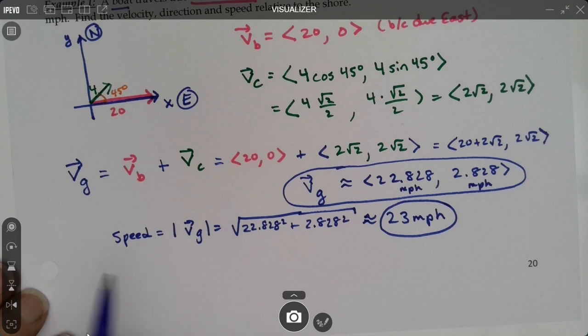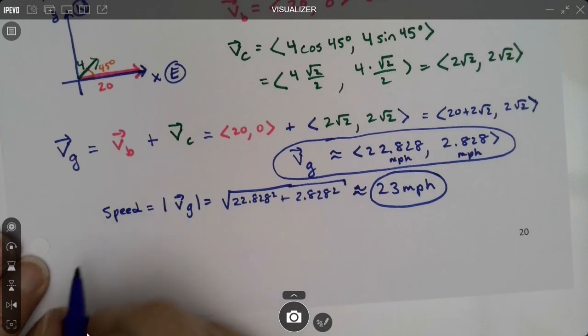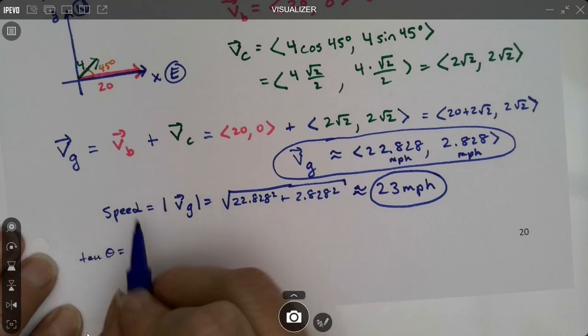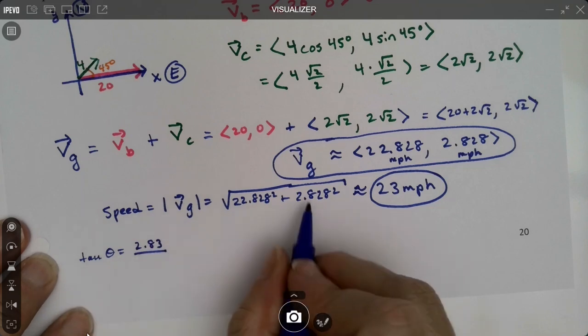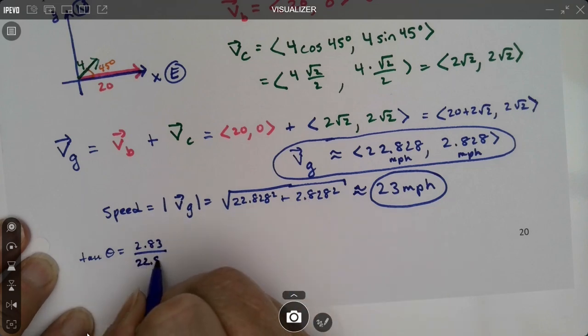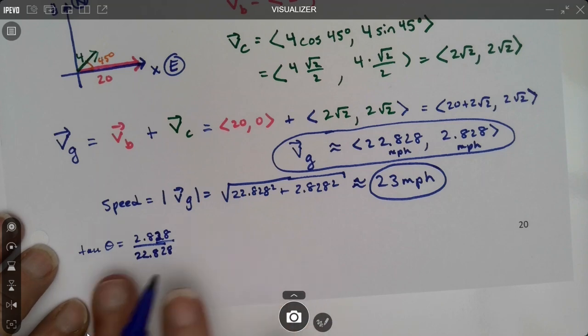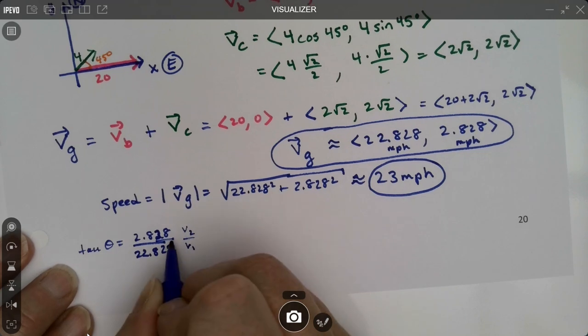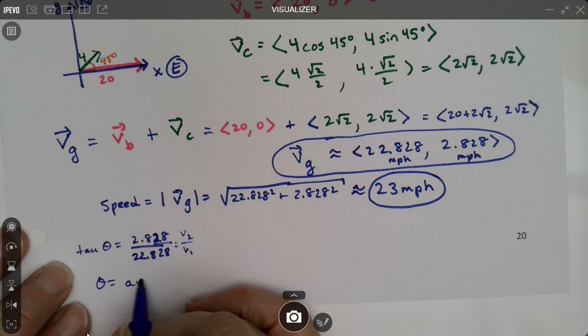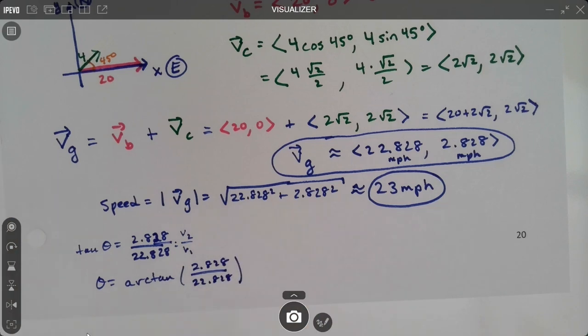Now what about the direction? The direction is the trickiest bit because you have to find the angle. The tangent of theta equals 2.828 divided by 22.828. So theta is the arctangent of that value, 2.828 over 22.828.